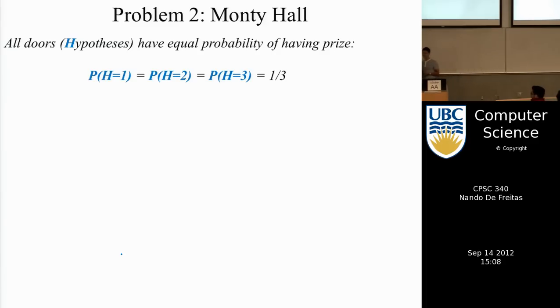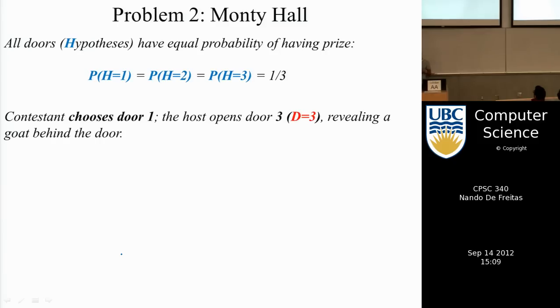Think of H here as your hypothesis about the world, and the hypothesis is where the prize is. Either the prize is behind door one, door two, or door three, and they all have equal probability. However, the contestant asks, we choose door one, and then the host opens door three, so we get an observation.